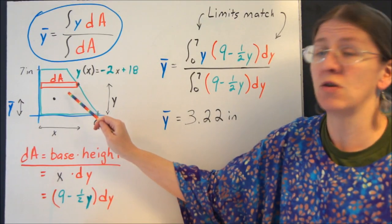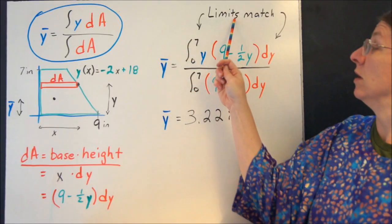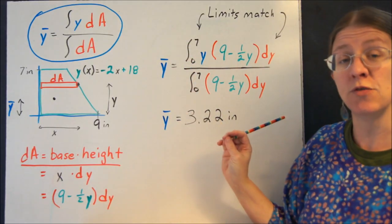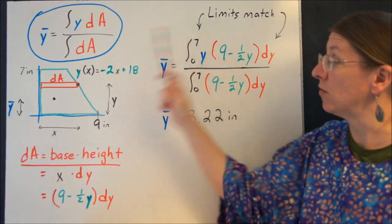That is the area of this horizontal rectangle. And that goes into this equation just like before. Your limits of integration have to match what you're differentiating with respect to. So if I'm going to differentiate with respect to y, these are 0 now to 7.